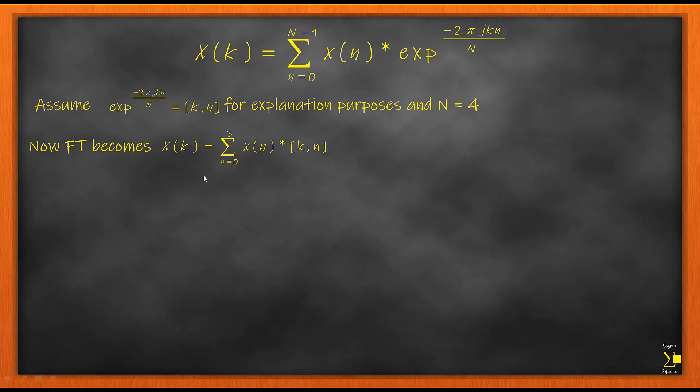So now your Fourier Transform equation becomes X(k) = Σ(n=0 to 3) x(n) * k_n, since this is replacing our exponential term just for explanation purposes.